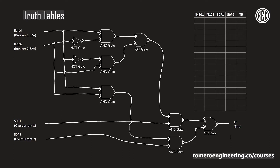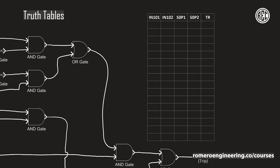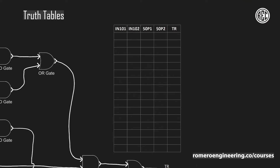Looking at this truth table, notice that I've listed the four inputs: input 101, 102, 50P1 and 50P2. Those are the inputs to our entire logic scheme, and the output is the trip equation, which I've called TR. What I want to do is list all the different possible combinations for the inputs — counting in binary from 0000 to 1111 — which gives me all the different combinations for these four inputs.